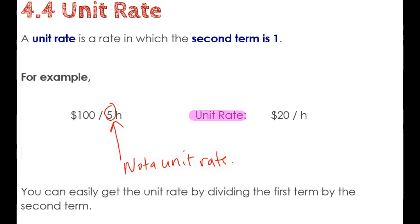I've written this as a unit rate in the second case—it's an equivalent rate and a unit rate of $20 per hour. Notice that's $20 per one hour. It's a unit rate because I'm talking about the rate per one of the second term.